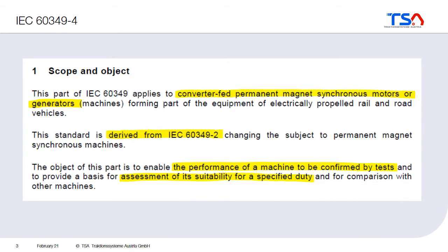One of the first things you see is that it deals with converter-fed machines. In traction, the electric machine is always connected to a converter — a power electronic device which controls voltage and current for the machine. The standard is valid for motors and generators, so all different types of electric traction machines. It is connected to part 2, which deals with induction machines, while part 4 deals with permanent magnet machines. Although main parts are similar, there are some differences between the machines.